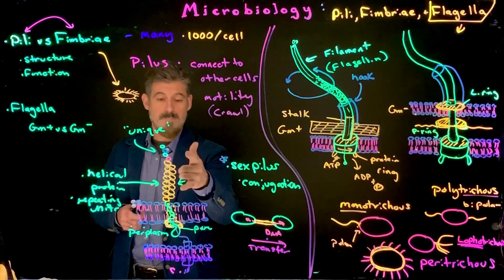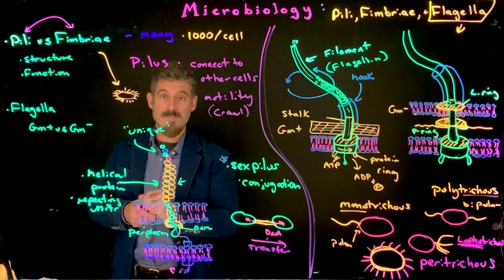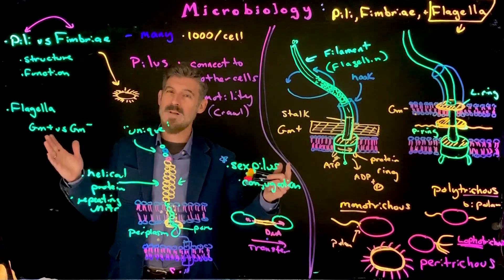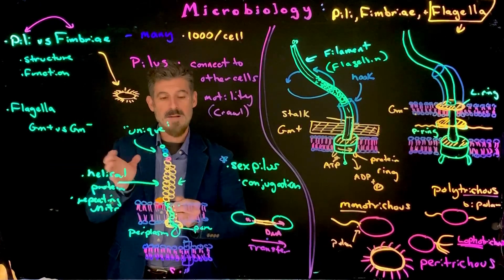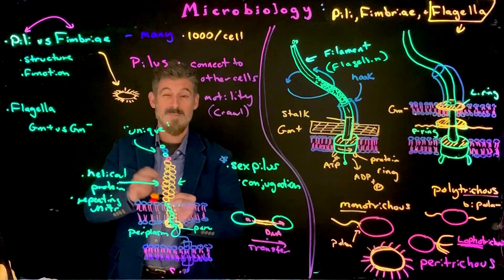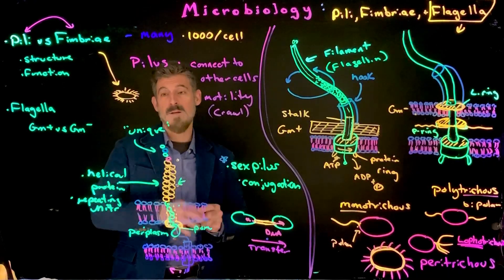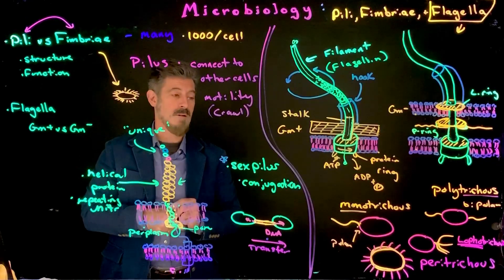You can have, you know, a few pilus, or you can have thousands of them. Typically, when they're attaching to other cells, we call them the fimbriae. Fimbriae are usually longer as well than the pilus, which is generic pilus, which is a little bit shorter. But they can also be used for moving as well. The pilus can extend out and then kind of contract and pull the cell along.